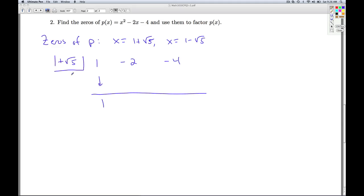Bring down the 1. 1 times 1 plus square root of 5 is 1 plus square root of 5. Add that to negative 2, I get negative 1 plus square root of 5. Now I have to multiply 1 plus square root of 5 times negative 1 plus square root of 5. This is actually a difference of squares. 1 times negative 1 is negative 1. I get plus square root of 5 minus square root of 5. Those cancel out. Plus radical 5 times radical 5 is 5. This actually gives me 4, which is exactly what I want. And now I get a remainder of 0.